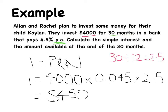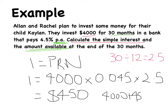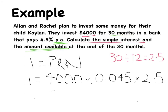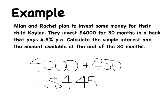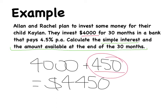So $450 is my interest. But the question asks for the simple interest and the amount available at the end of 30 months. My last step is taking the original amount invested — $4,000 — adding the $450 to it, and getting a total of $4,450 available. So my total amount is the amount invested plus the interest. First I work out the interest, which answers one part of the question, then I answer the second part: how much will be available at the end of those 30 months? $4,450.